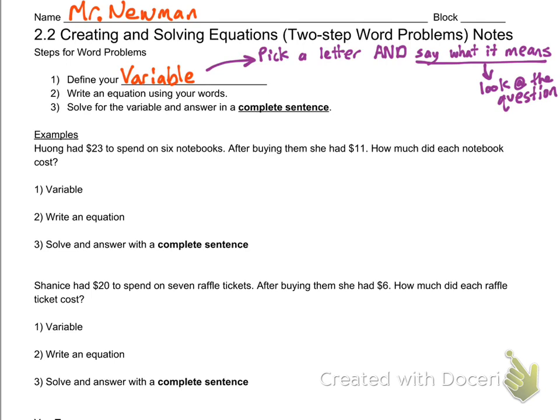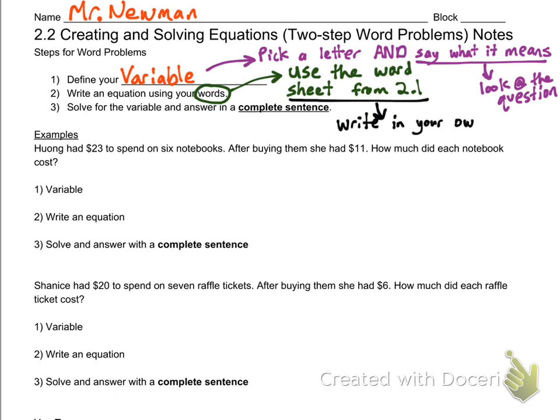As far as picking a letter, it can be anything, so you can't get that part wrong. But you can get it wrong by not saying what it means or forgetting to do it. Then you're going to write an equation using your words. The words I'm talking about are from that sheet in a previous video from the notes. Things like 'of' means multiply, 'sum' means add, 'total' can mean add, and 'greater than' can mean subtract. Lastly, you're going to solve for the variable and answer in a complete sentence.